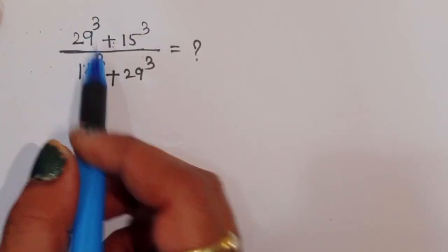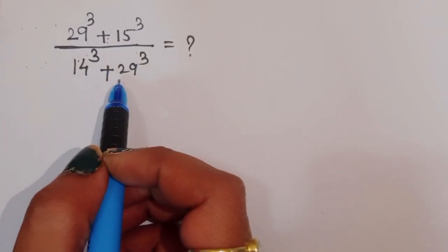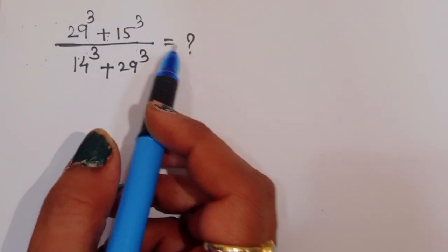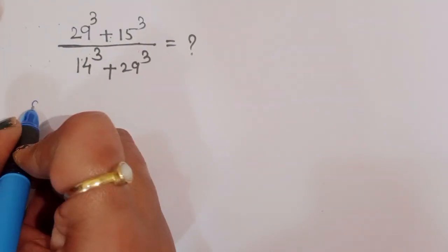The question is: (29³ + 15³) divided by (14³ + 29³) is equal to what? Let's start the solution.